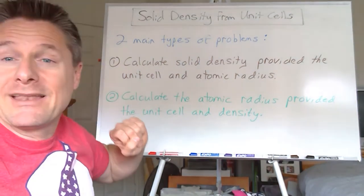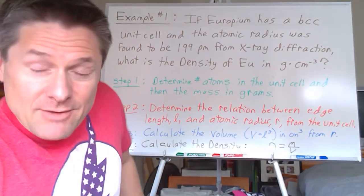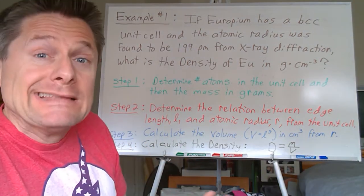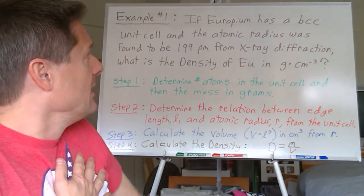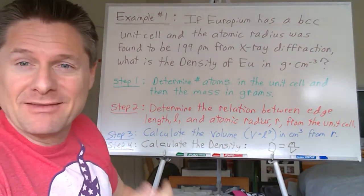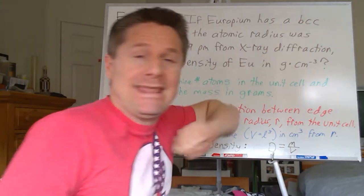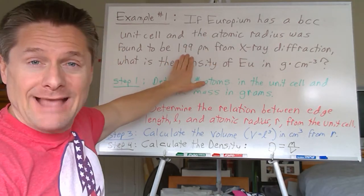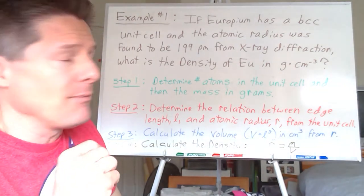Let's do the first one: calculating the solid density provided the unit cell and atomic radius. Ready for the first example? Once you know how to approach it, not too tough — just basic math. I can give you any metallic element, as long as it has a unit cell structure under the cubic category. So if europium has a body-centered cubic unit cell and the atomic radius is 199 picometers, determined from x-ray diffraction, you've got your two things: the type of unit cell and the atomic radius.